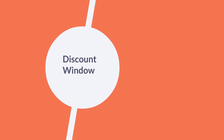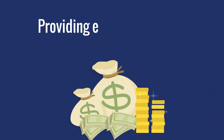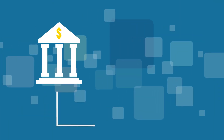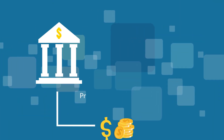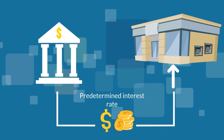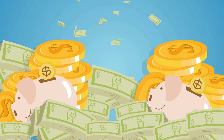Discount window lending. Central banks serve as the lenders of last resort, providing emergency funding to financial institutions facing liquidity shortages. Banks can borrow from the central bank's discount window at a predetermined interest rate, providing them with access to funds to meet short-term funding needs and maintain solvency.